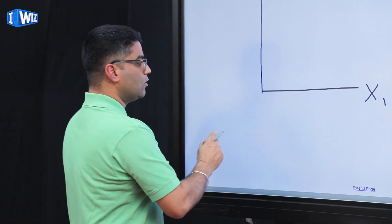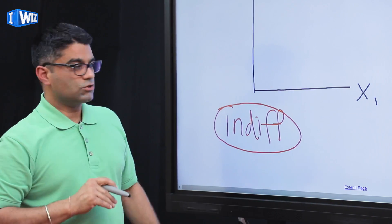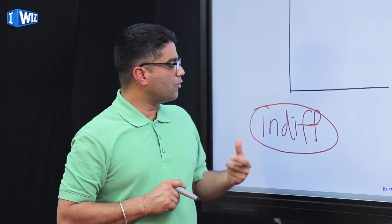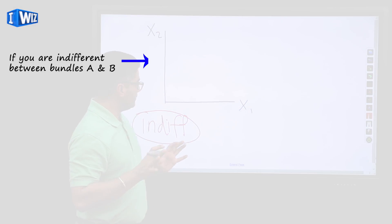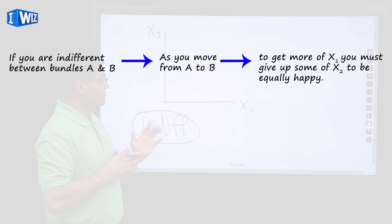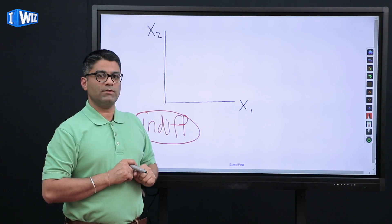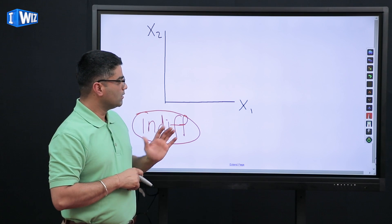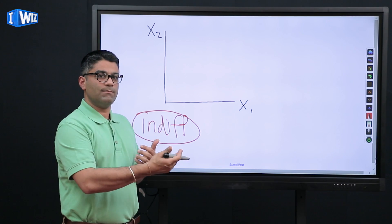All the bundles on an indifference curve are going to leave us indifferent or equally happy. As you get more of x1, you have to give up some of x2 to remain equally happy, and vice versa. Otherwise, we go back to monotonic preferences — if you're unsure about that concept, review that video. Monotonic preferences means I prefer one bundle over the other, while bundles being indifferent means I am equally happy.